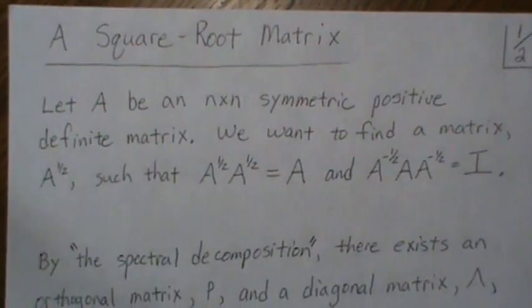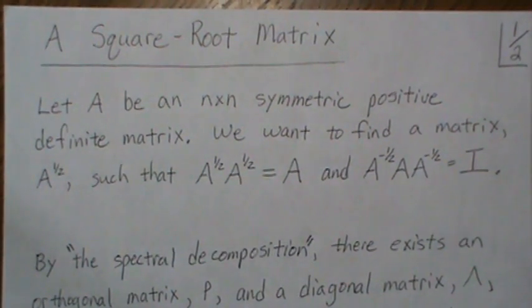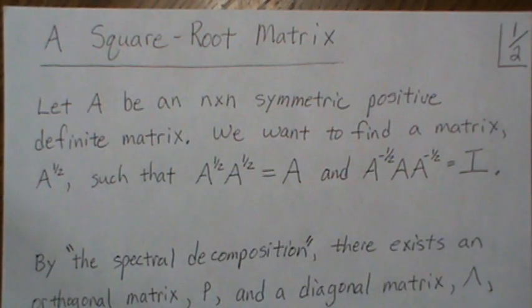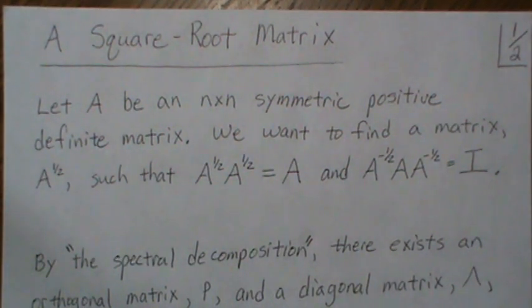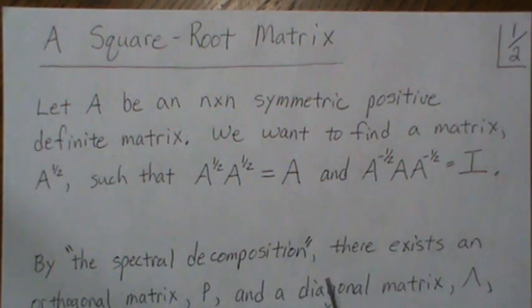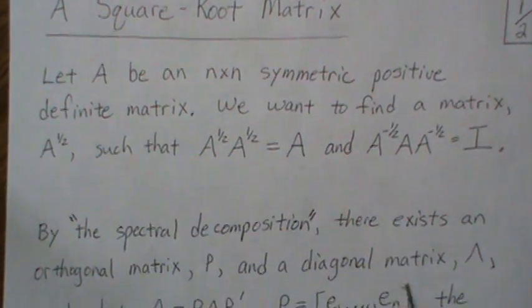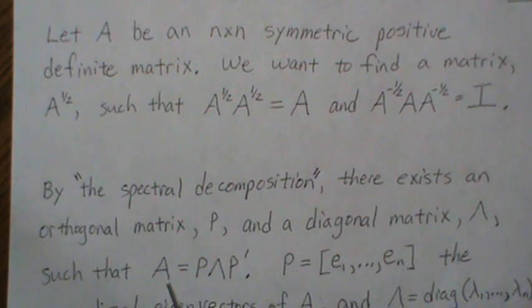So I have a video called The Spectral Decomposition, and it talks about how to decompose a matrix into matrices that house the eigenvectors and the eigenvalues. If you haven't seen this video, I'd recommend going back and watching it. So by the Spectral Decomposition Theorem, there exists an orthogonal matrix P and a diagonal matrix lambda, such that A is P lambda P prime.